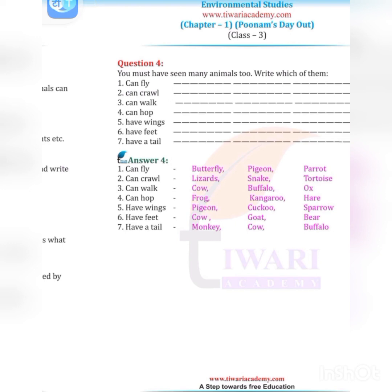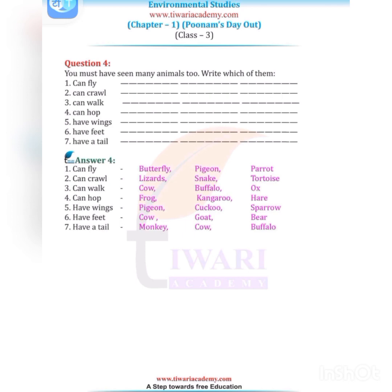Question four: Which animals can fly? Butterfly, pheasant, parrot. Which can crawl? Lizards, snakes. Which can walk? Cow, buffalo, ox. Which can hop or jump? Frog, kangaroo. Animals that have wings include pheasant, cuckoo, and sparrow. Animals that have a tail include cow, goat, and buffalo, as well as monkey.